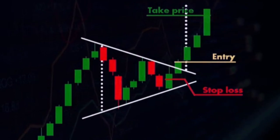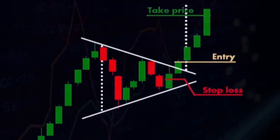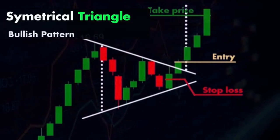For trading strategy, traders often enter a position when the price breaks out of the triangle. For a bullish breakout, this would be above the upper trend line; for a bearish breakout, it would be below the lower trend line. A stop loss order is usually placed just outside the opposite side of the breakout to manage risk. The target price is often estimated by measuring the height of the triangle at its widest point and projecting that distance from the breakout point.